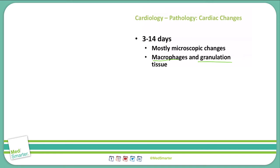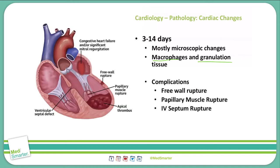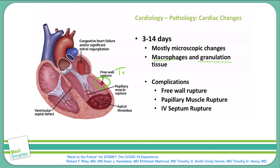Complications during this point in time include free wall rupture, where we actually rupture through the heart and allow blood to flow out. That free wall rupture can lead to tamponade. Papillary muscle rupture — the papillary muscles contain the mitral valve leaflets, so losing those papillary muscles can lead to mitral regurgitation. And finally, we could have an issue with an interventricular septum rupture, which can lead to a left-to-right shunt.